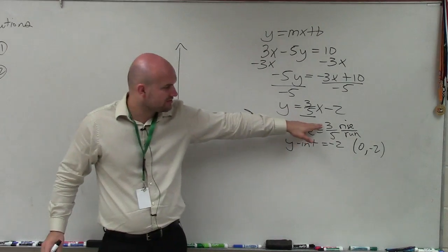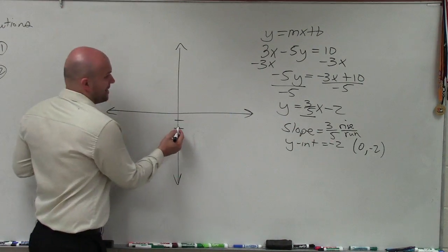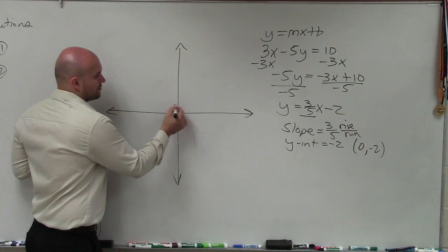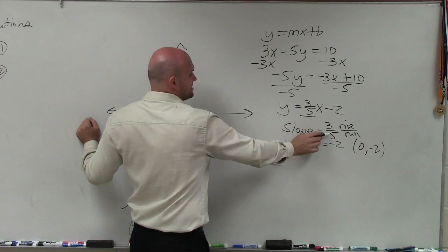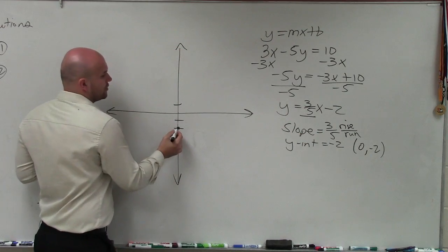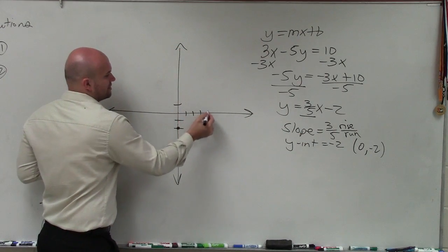So since the change in the y values of any two points is 3, a positive 3, I can go up 3 units. And then since the change in the values of the x values is positive 5, I'll go over 5 units. 1, 2, 3, 4, 5.